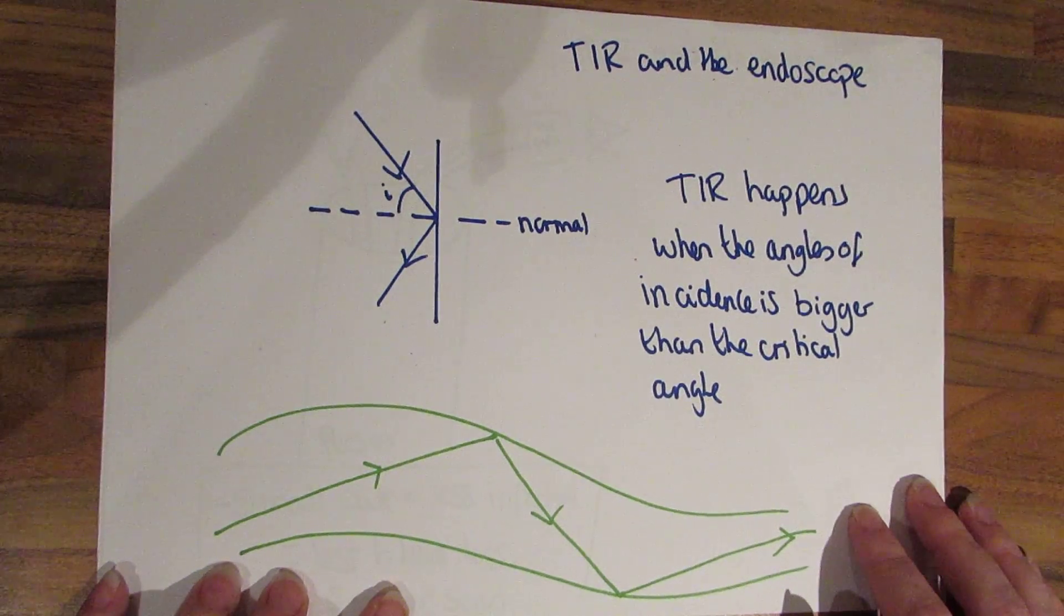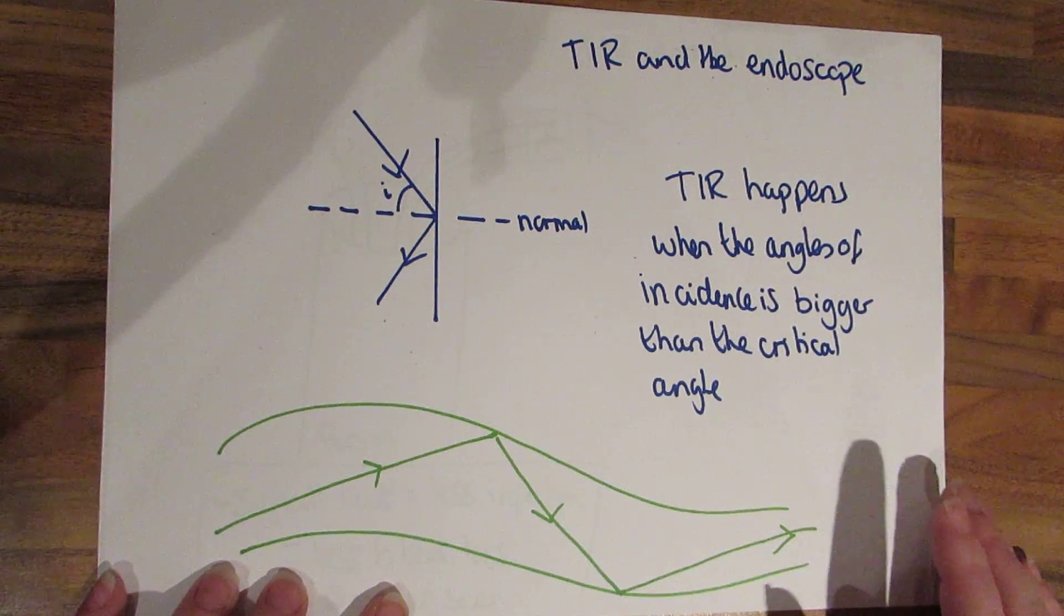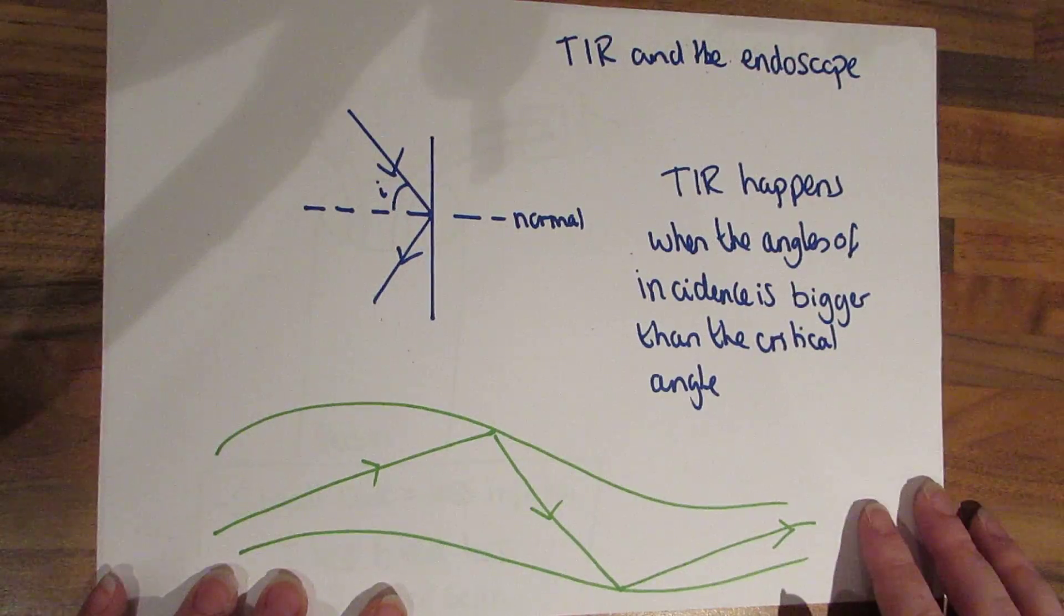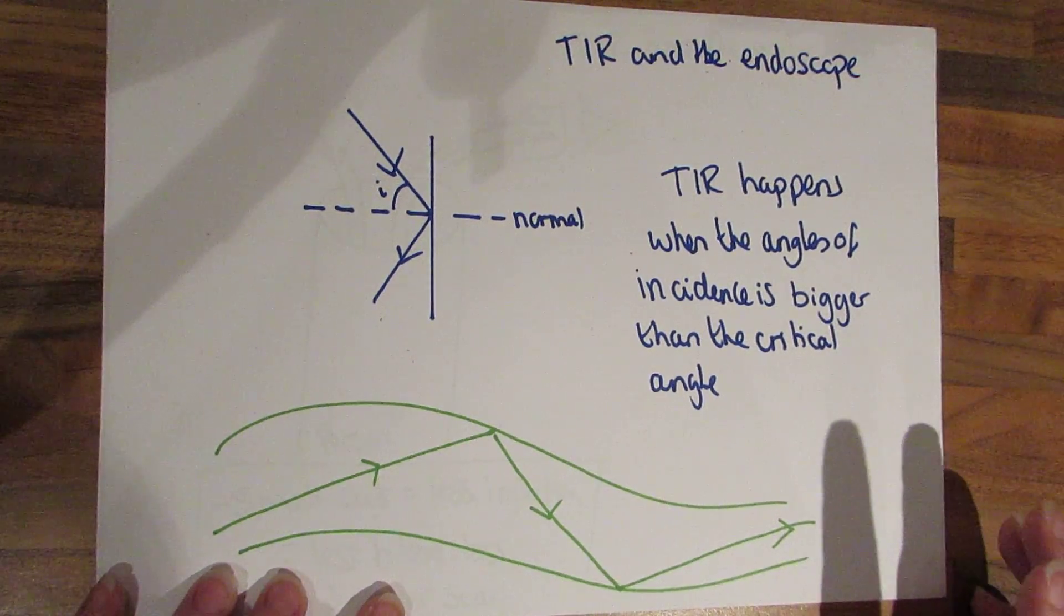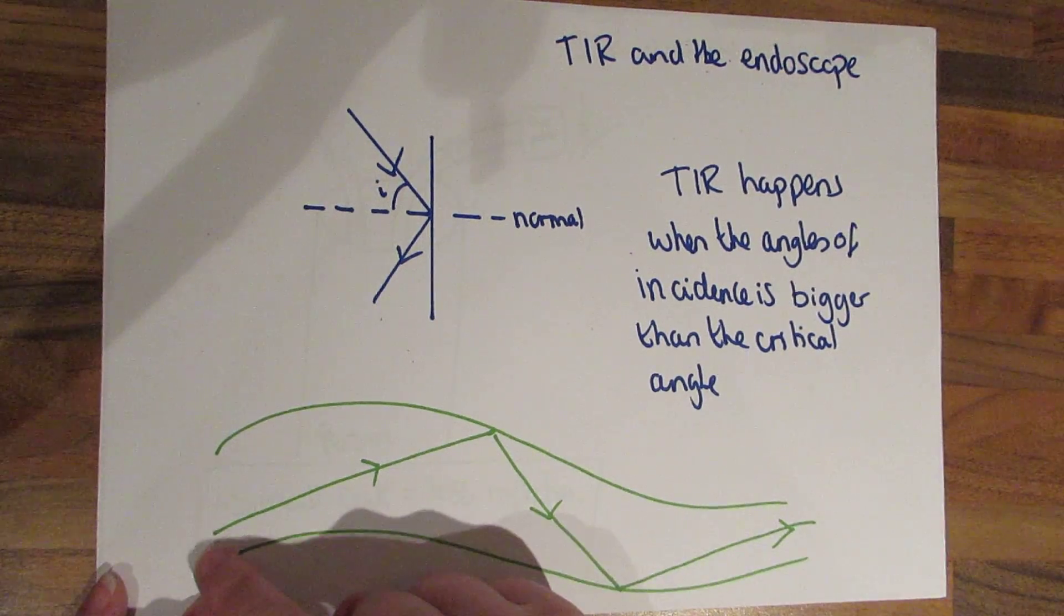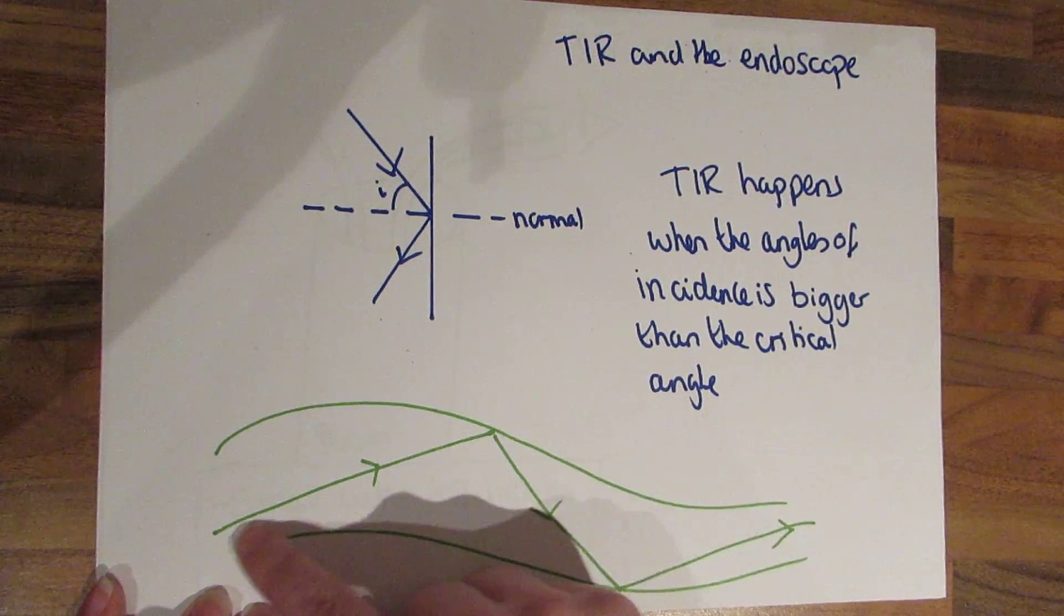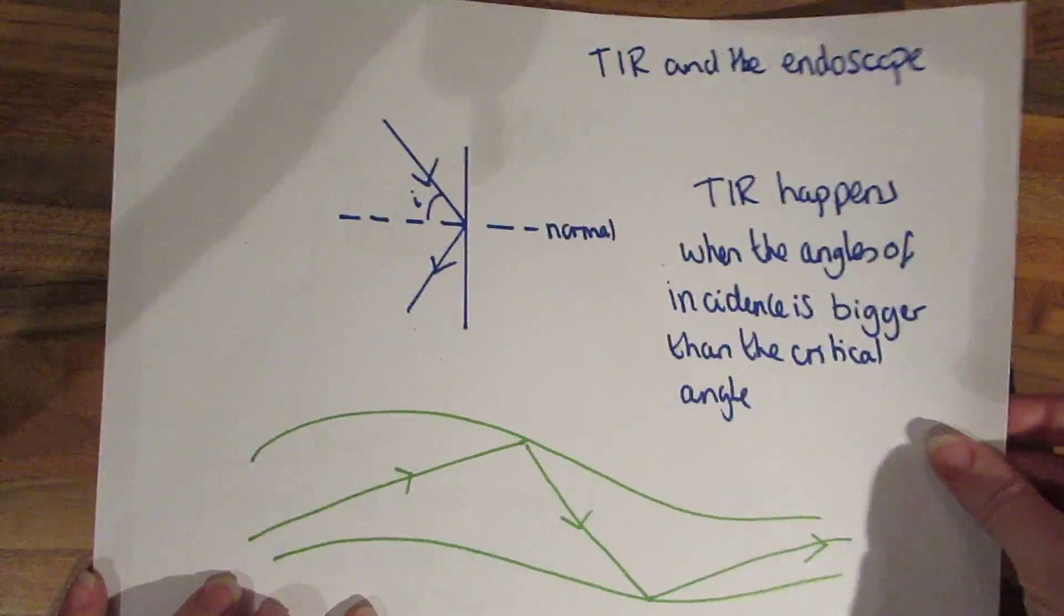So reflection can be used in an endoscope where total internal reflection takes place. Total internal reflection will happen when the angle of incidence is bigger than the critical angle and this is our endoscope here and the light just bounces through it.